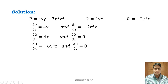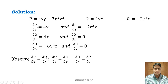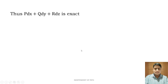Similarly, partially differentiate R with respect to x and y: ∂R/∂x = −2z × 3x² = −6x²z, and ∂R/∂y = 0 since the y term is absent. Observing: ∂P/∂y = ∂Q/∂x (both equal 4x), ∂Q/∂z = ∂R/∂y (both equal 0), and ∂R/∂x = ∂P/∂z (both equal −6x²z). Therefore P dx + Q dy + R dz is exact, hence the given integral is independent of the path.